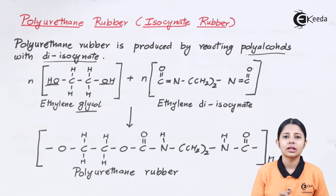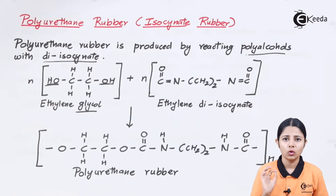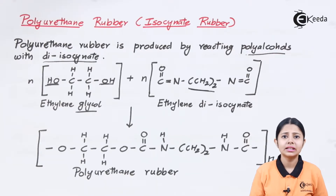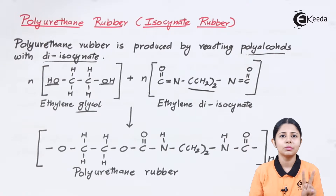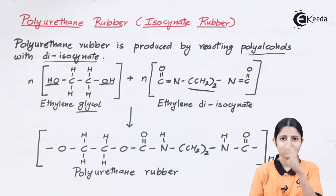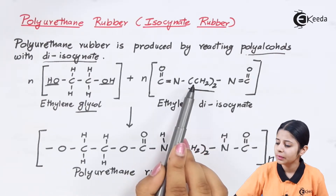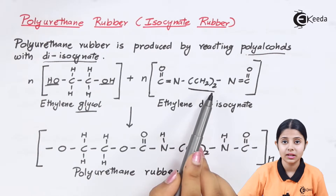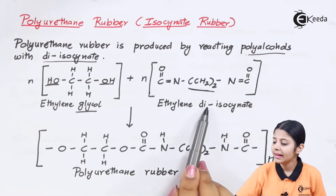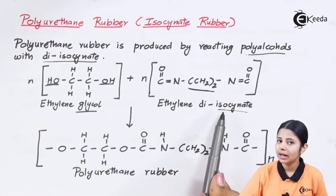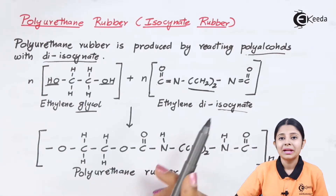This is diisocyanate. The specific compound used here is ethylene diisocyanate. Ethylene means ethane — two carbons. Di means two, so there are two isocyanate groups. The isocyanate groups are NC groups. So in ethylene diisocyanate we have two NC groups attached at both ends of a two-carbon chain: NC–CH2–CH2–NC.